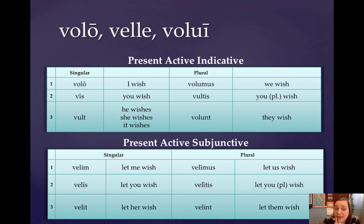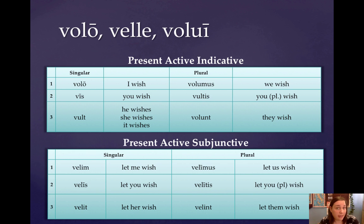The present active subjunctive follows the general conjugation of the subjunctive of esse. So: velim, velis, velit, velimus, velitis, velint.